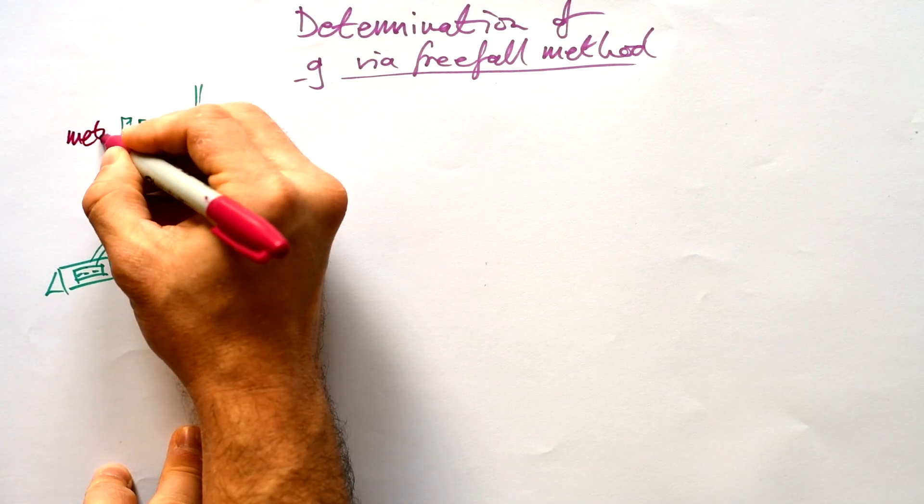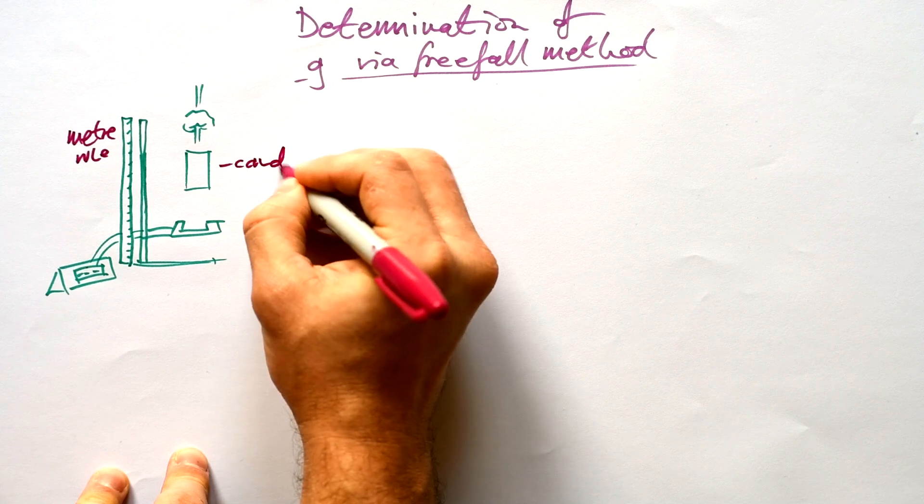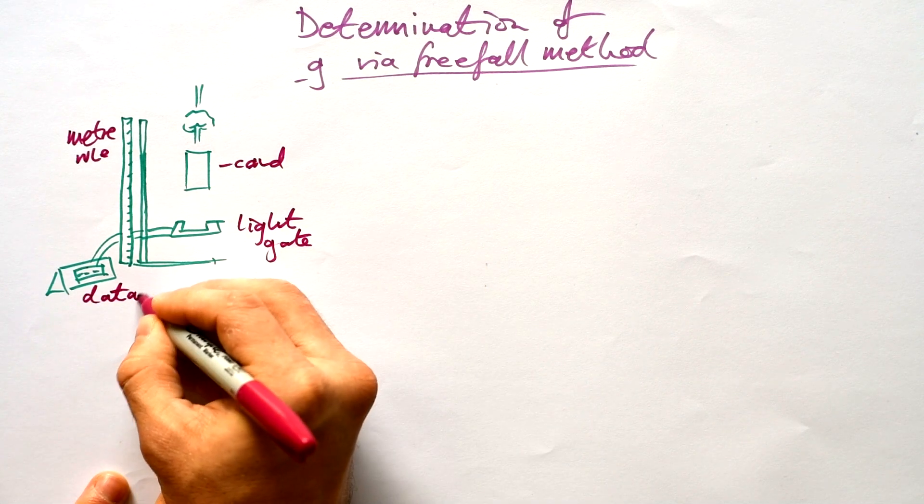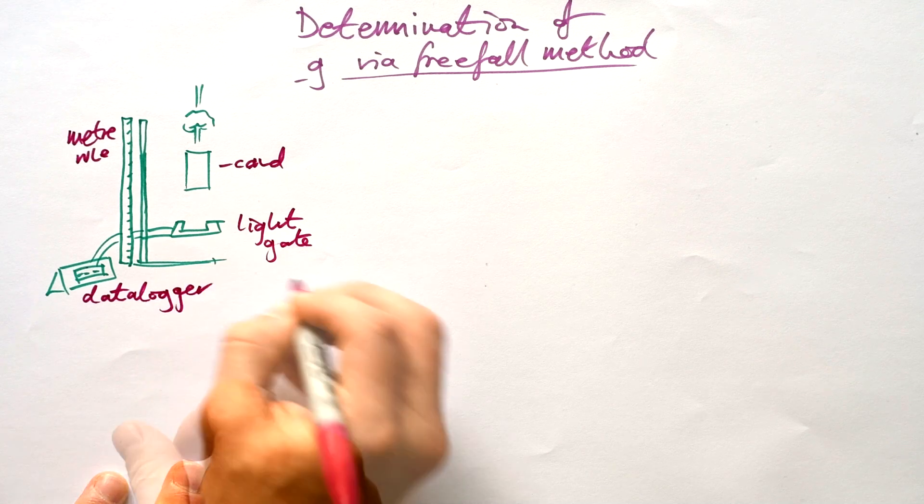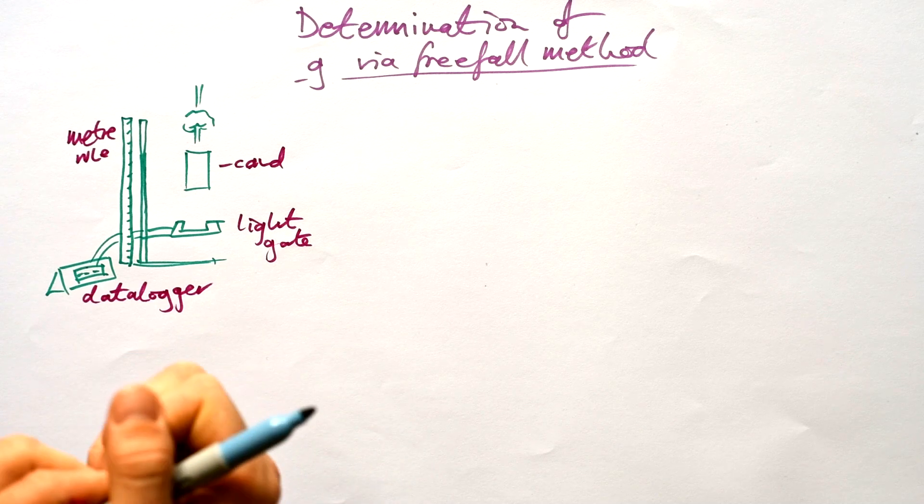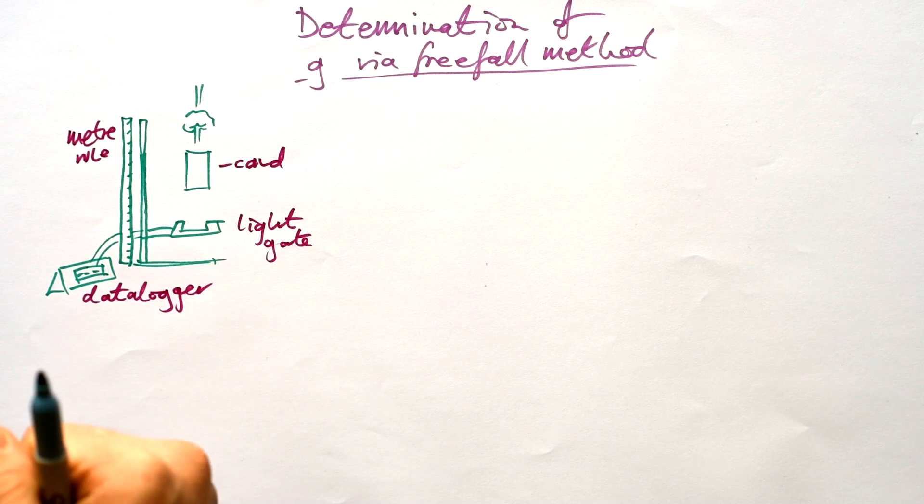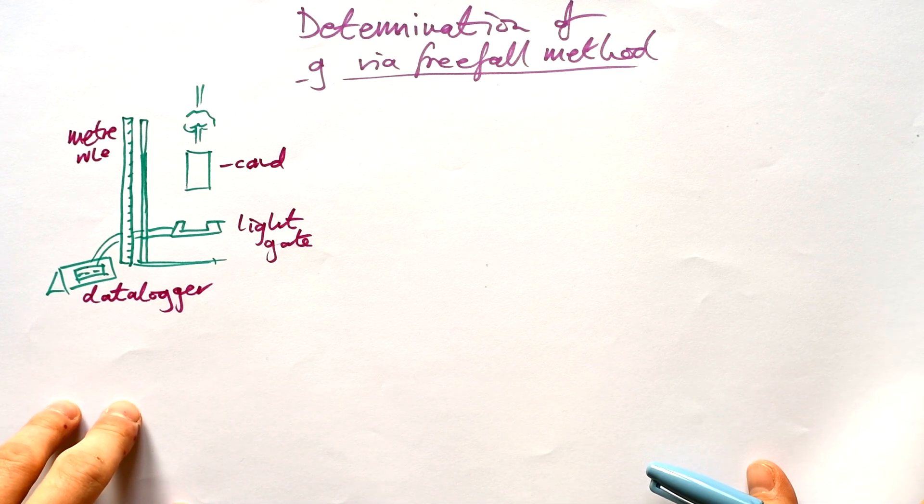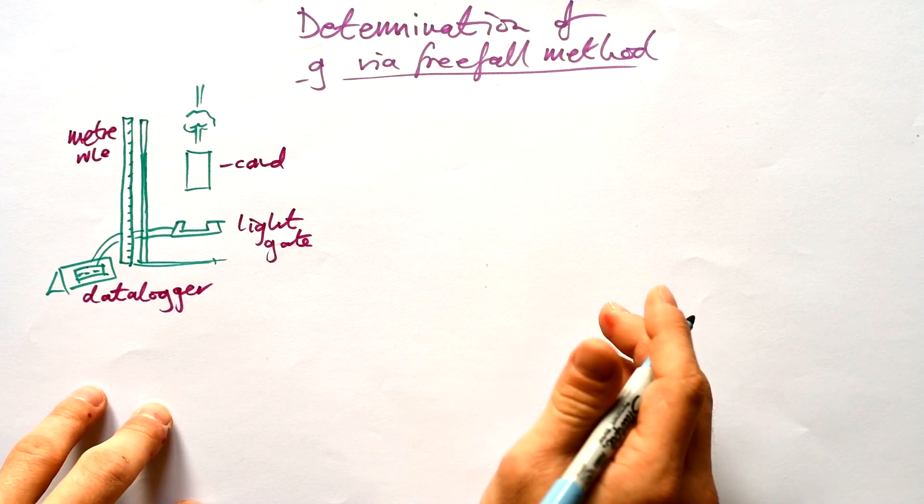So here's my setup. I have a meter rule, I have a piece of card, I have a light gate, and I have a data logger that the light gate is plugged into. Now again, there's a couple of different ways you can do this. You can use data loggers that have two light gates attached, but the problem with that is it will do all the calculations for you, and so that sort of negates the whole experiment. So we're just going to have one light gate.